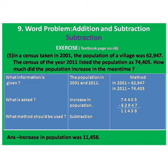What method should be used? Subtraction. Ta waga method madhe kaay lae aahe? Ki 2001 madhe population kiti zha le la hai — 62,947. And in 2011 — 74,405. And make subtraction. Subtract 62,947 from 74,405. The answer is 11,458. Then write the answer in one sentence: Increase in population was 11,458.